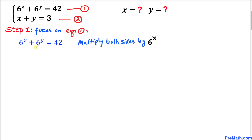Since we want to find the value of x and y, we are going to manipulate this equation. The very first step is we are going to multiply both sides of the equation by 6 power x. So let's multiply the left side by 6 power x and the right hand side by 6 power x as well, and now let's distribute.